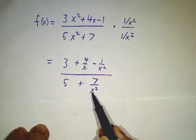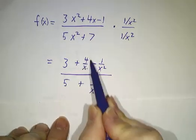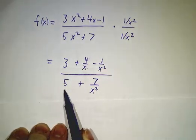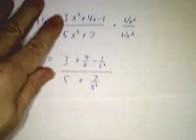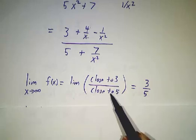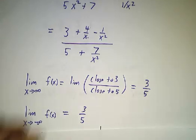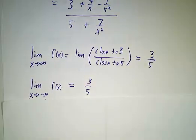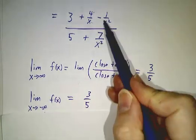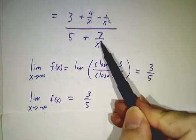As x goes to infinity, the numerator gets really close to 3 — this term gets small, this term gets small, and you're just left with a 3. The denominator gets really close to 5. So the limit of f is the limit of the numerator divided by the limit of the denominator, which is 3 fifths. Likewise, the same thing happens as x goes to minus infinity. Whether you plug in a gigantic positive or negative number, the numerator is close to 3, the denominator is close to 5, and the ratio is close to 3 fifths.